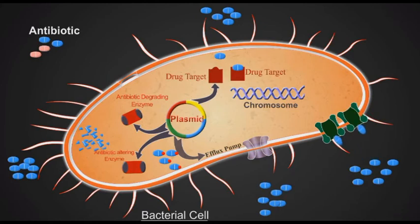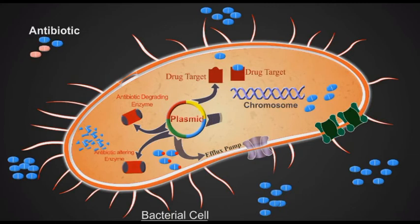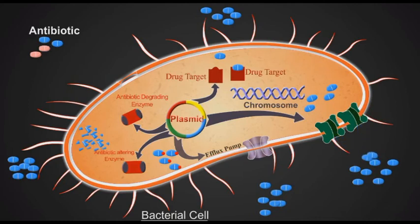Some antibiotic groups enter the cells through specialized transporters or channels in the cell wall. As expected, the resistant bacteria close these channels and leave the antibiotics unable to enter the cells.